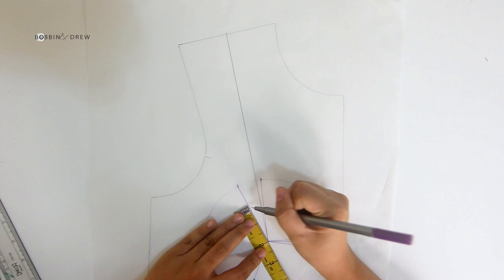Mark two inches above both dart legs. This helps us later on when we complete the garment.